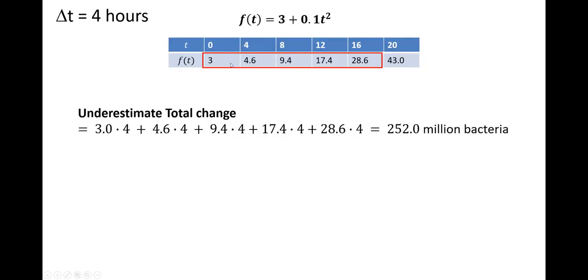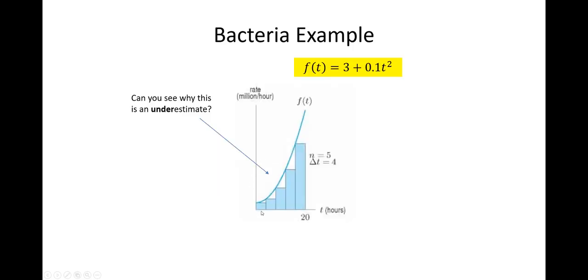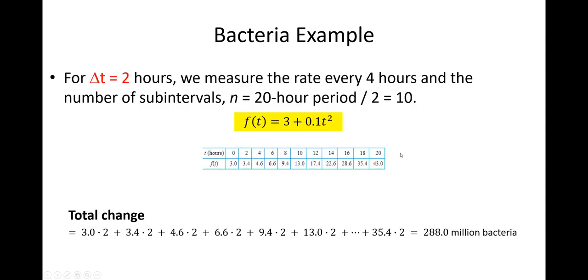So here I can tell why it's an underestimate because I picked the smaller values. But when I plot these points, remember these are just 0.03, 4, 4.6, 8, 9.4. When I plot those points, they are actually underneath this curve.